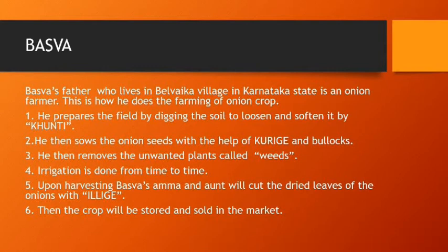First of all, he prepares the fields by digging the soil to loosen and soften it using a khunti. He then sows seeds with the help of a khorige and bullocks. He then removes the unwanted plants called weeds, and irrigation is done from time to time. Upon harvesting, Baswa's amma and aunt cut the dried leaves of the onions with an ilige. Then the crop is stored and sold in the market.